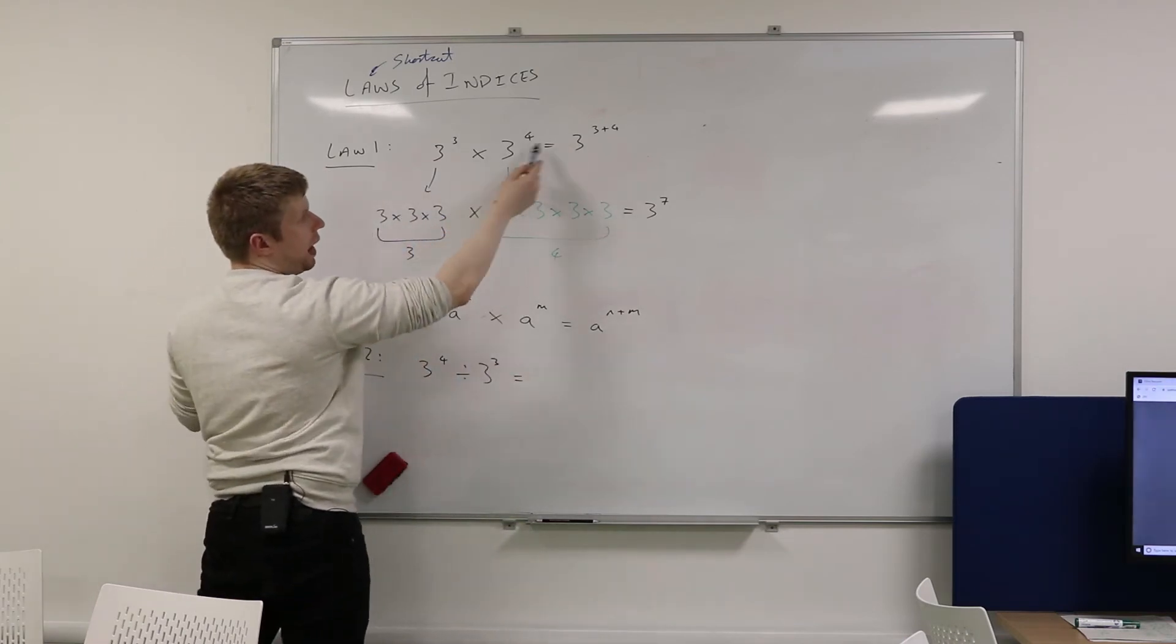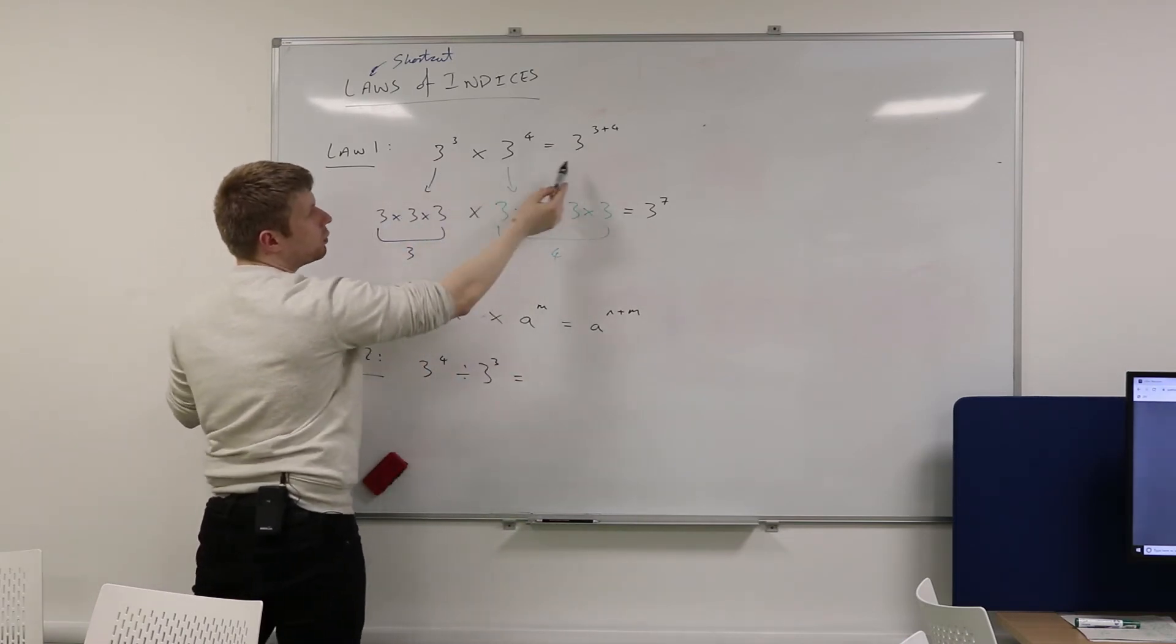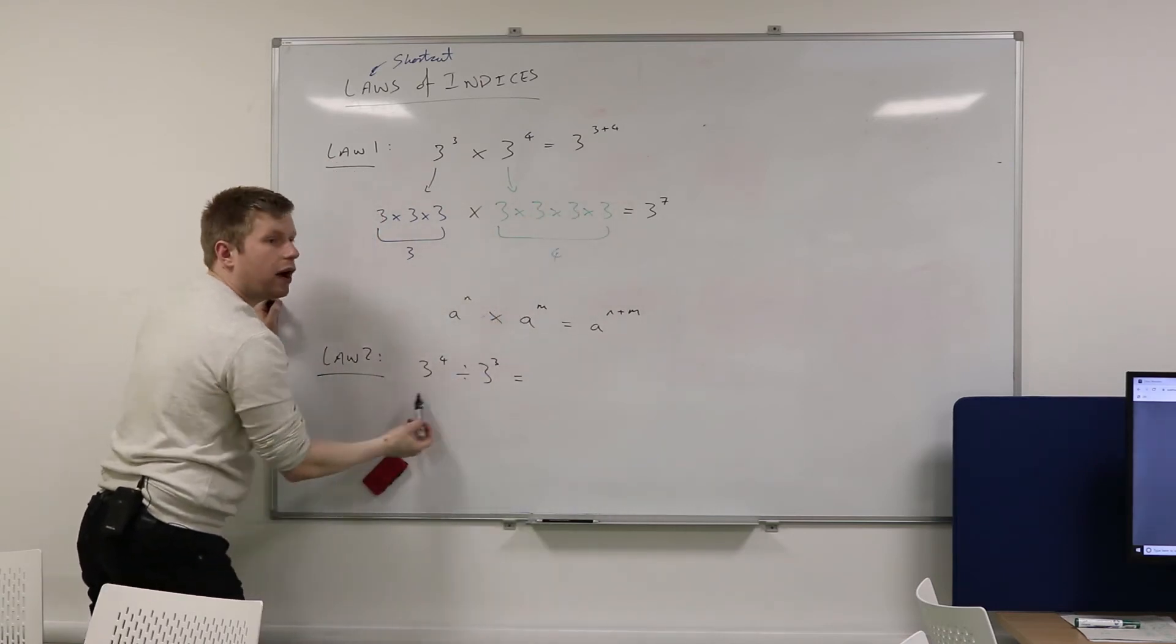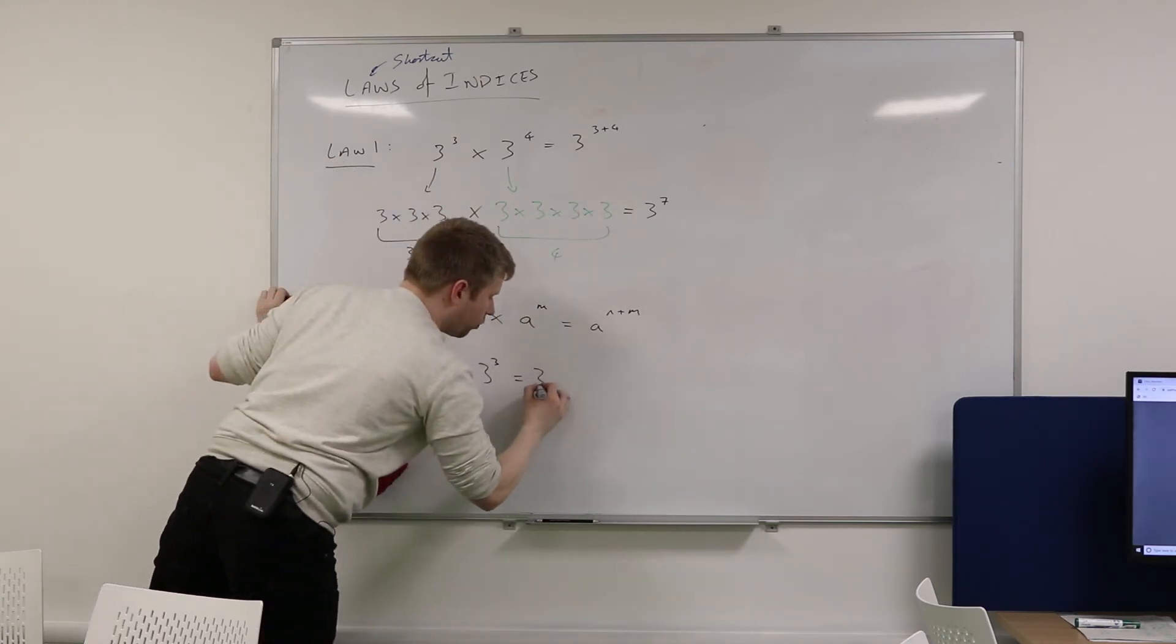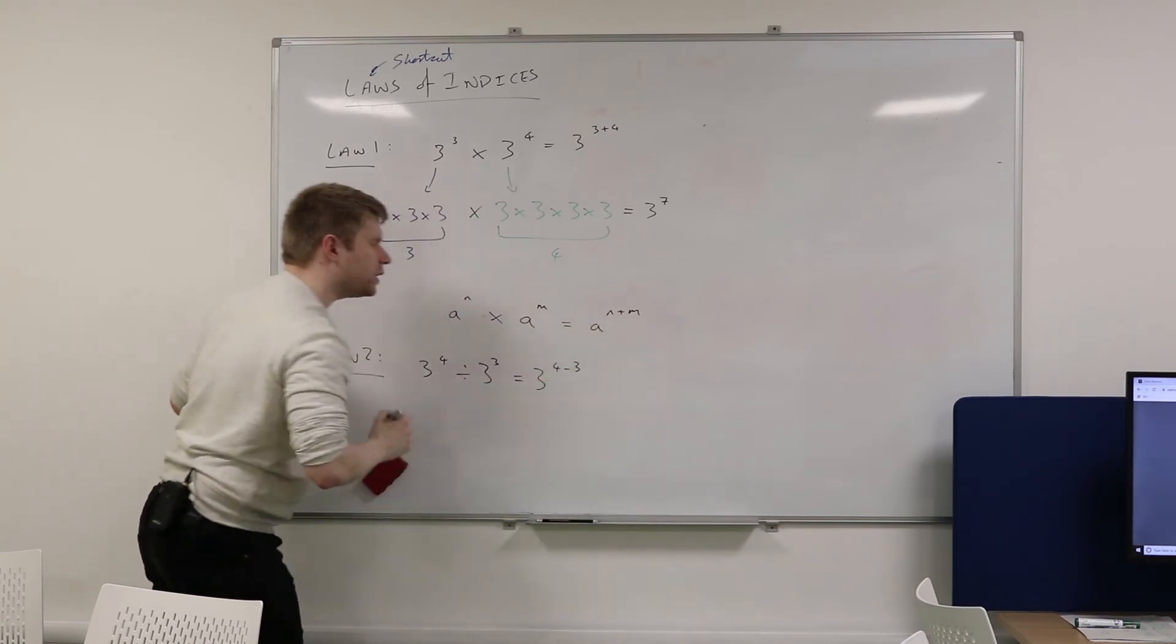So you can kind of see that it's just a parallel to this. Here, when we were multiplying, we added. So here, when we're dividing, we should subtract. And you are right. But can you convince me why?